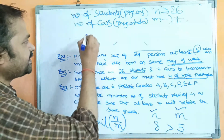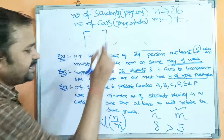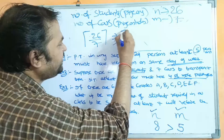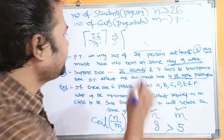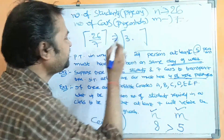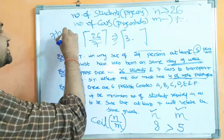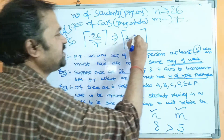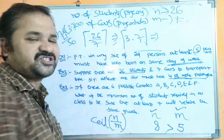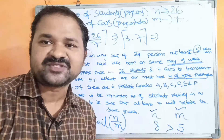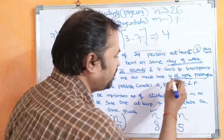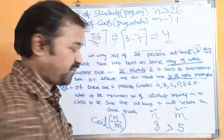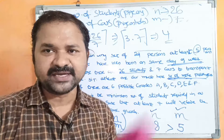Applying the formula: at least one pigeonhole must contain ceiling of n by m — ceiling of 26 by 7. 7 threes are 21, so 26 divided by 7 is approximately 3.7 something. The ceiling function produces the next integer value, which is 4. We have to prove 4 or more passengers, and we got the result 4, so the solution is correct.